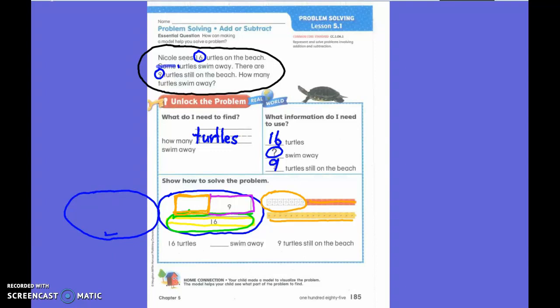Very very close. So can you try to recount it? Make sure that you didn't count an extra one on accident. There you go. Seven swam away.